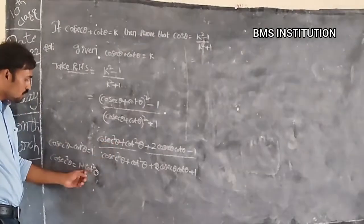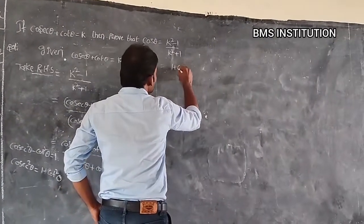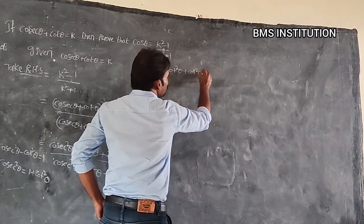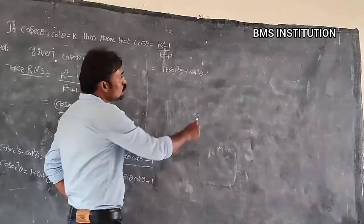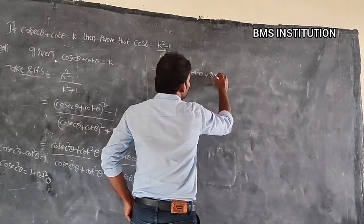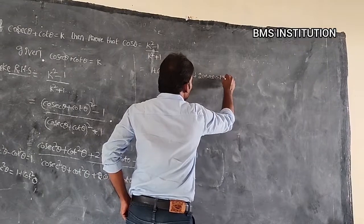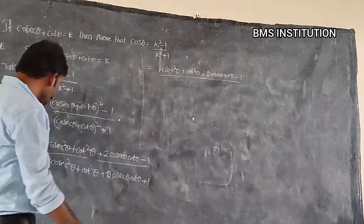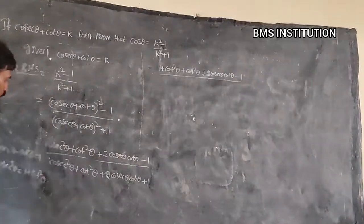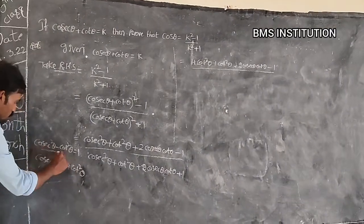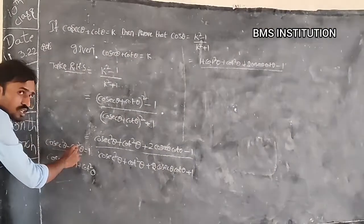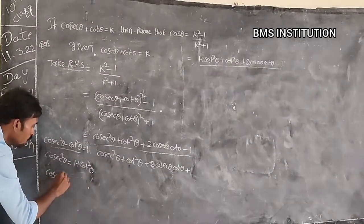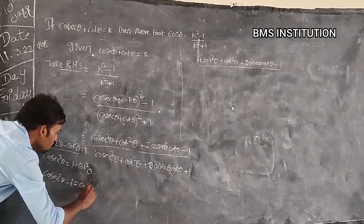In place of cosec²θ we substitute 1 + cot²θ. So we get: 1 + cot²θ + cot²θ + 2 cosecant θ · cot θ − 1, and similarly in the denominator we also substitute for cosec²θ, giving 1 + cot²θ + cot²θ + 2 cosecant θ · cot θ + 1.